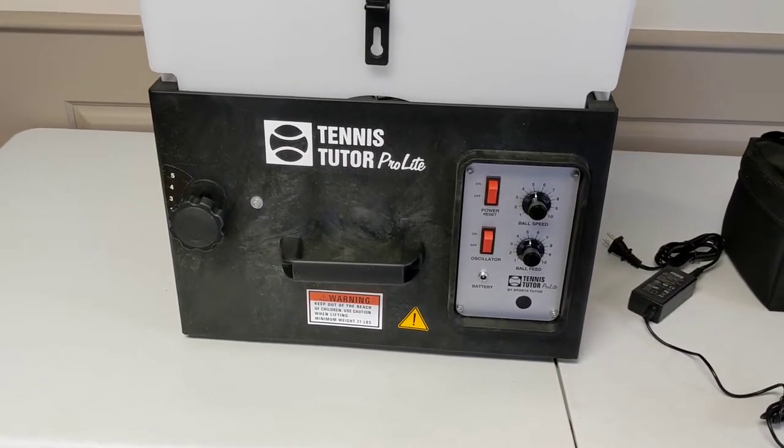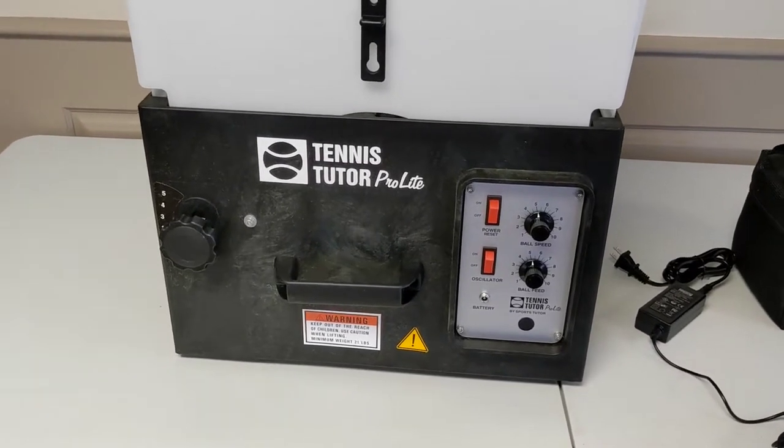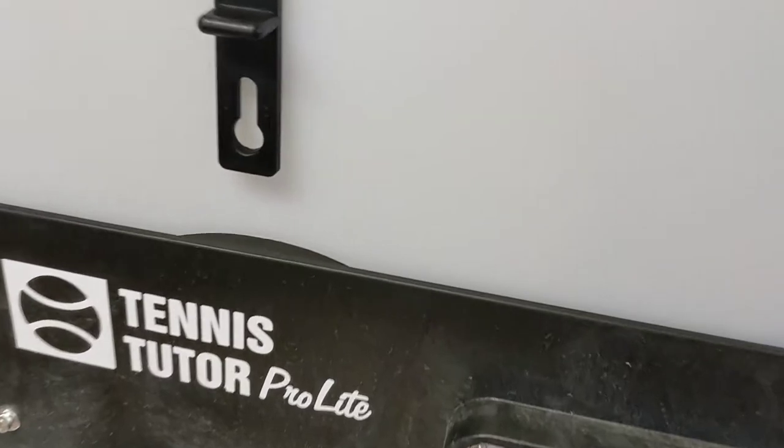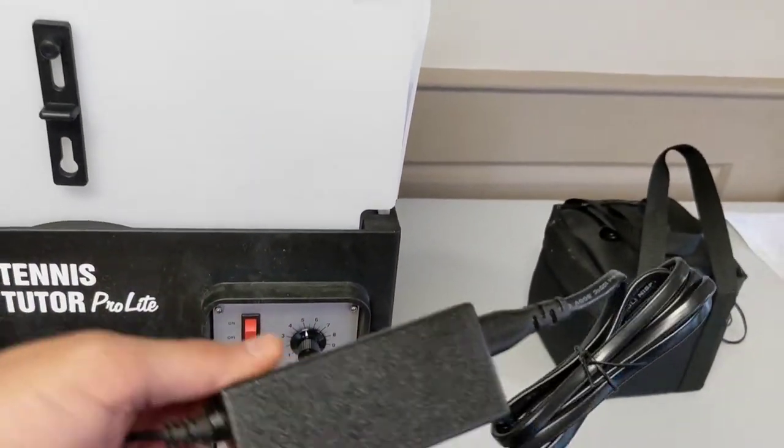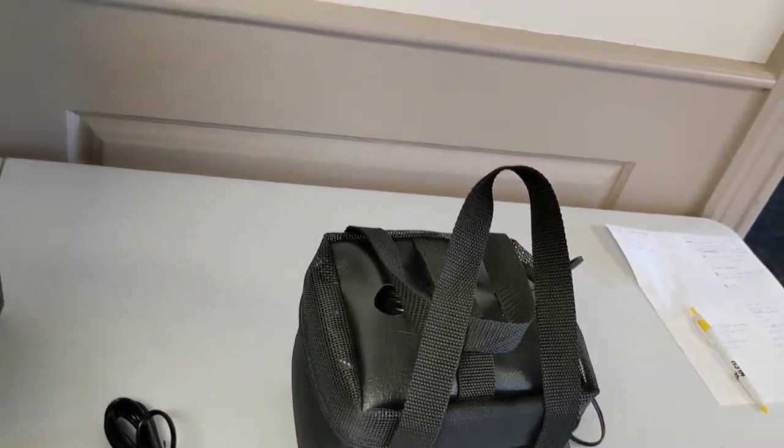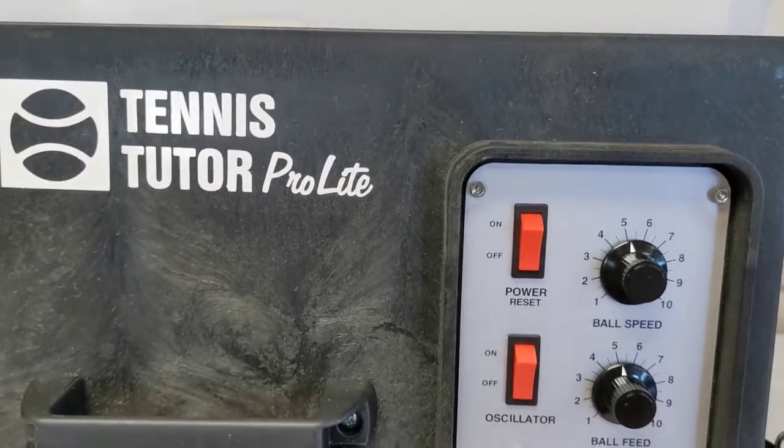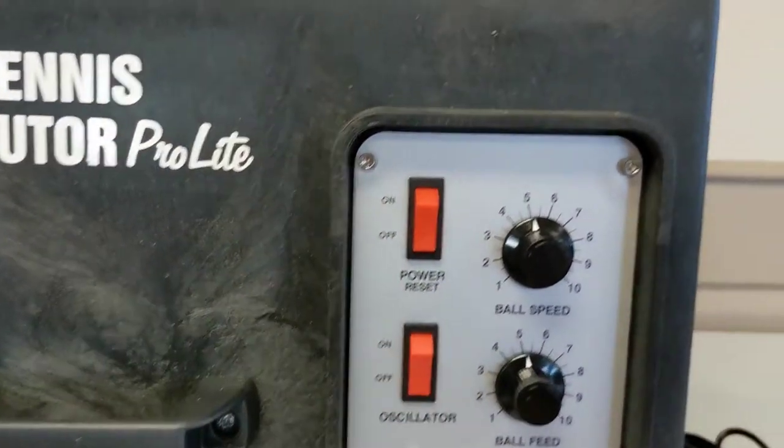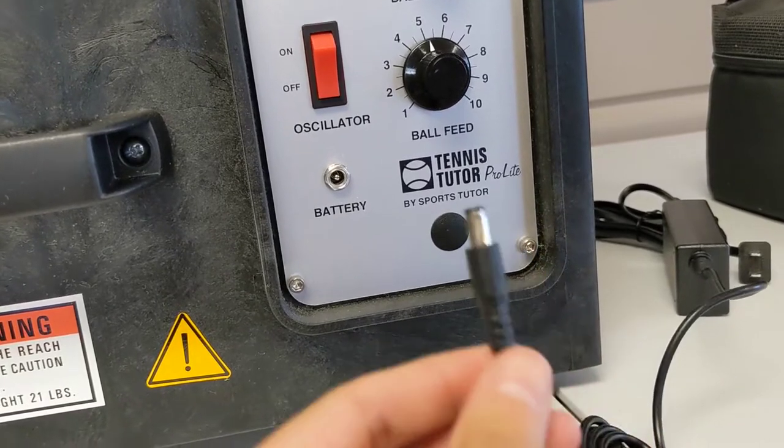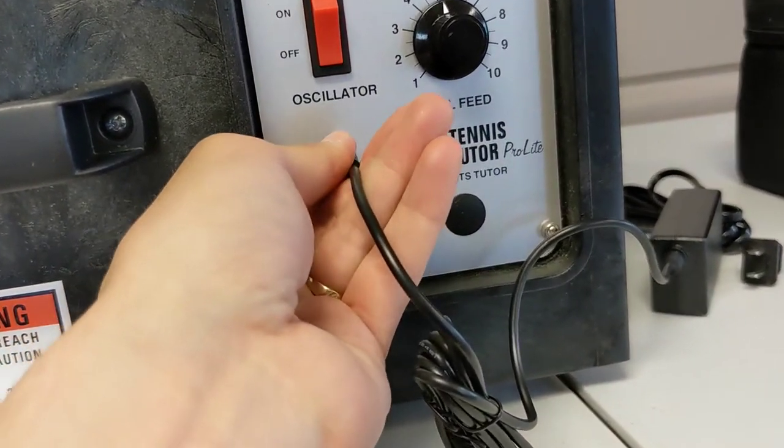To recharge the Tennis Tutor ProLite machine, you need to locate the external charging cable, which looks like this, plug one side into the wall, ensure that the machine is powered off, and plug the other side into the battery port.